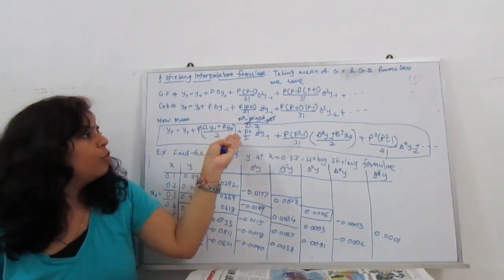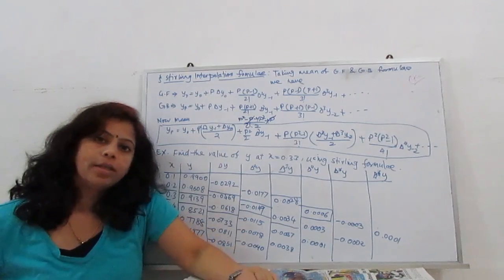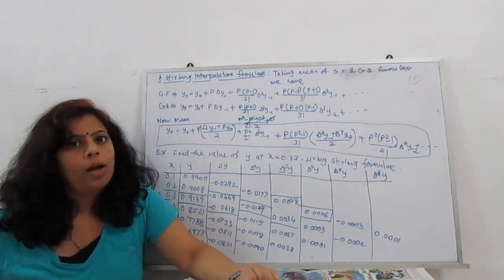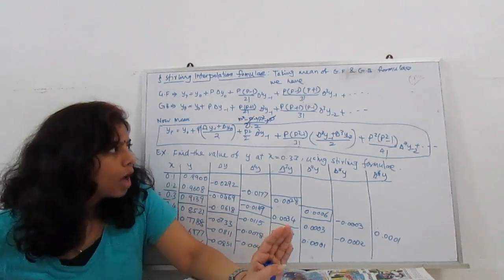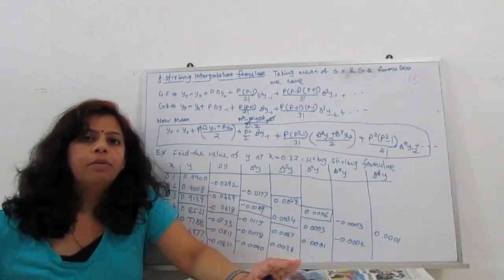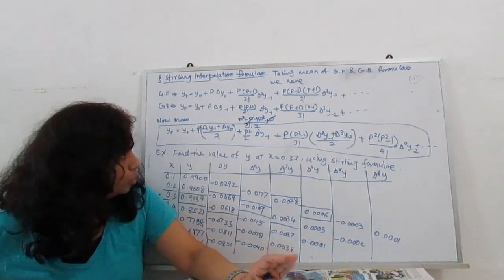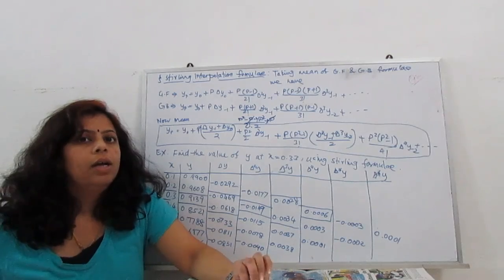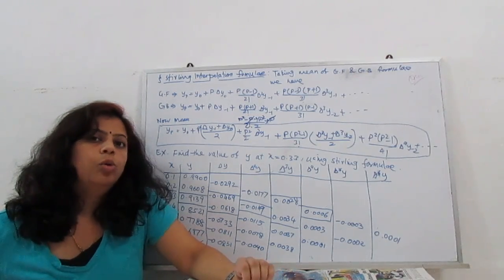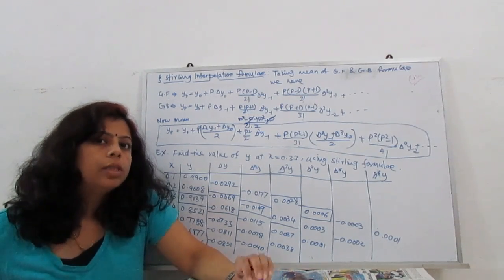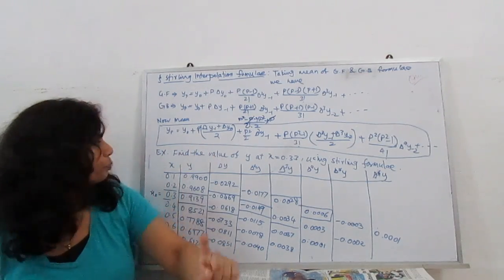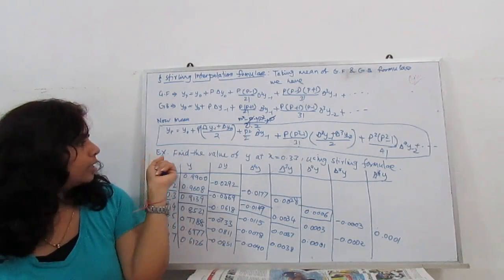This new formula derived from averaging Gauss forward and backward is known as the Stirling interpolation formula. We will now use this formula and solve an example so you can easily understand how to apply it.